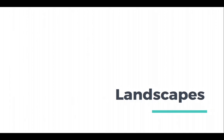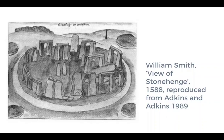Moving on to landscapes. This is a very early view of Stonehenge, reproduced from Adkins and Adkins in your reading. They speculate it was reproduced by somebody who had never actually seen the monument — it is very much within a Romantic tradition of looking at landscapes and ancient monuments. The stone castle in the background didn't really exist, and the placing of the stones is incorrect. It was mostly meant to portray the feeling of Stonehenge without necessarily measuring it.